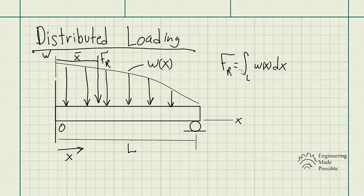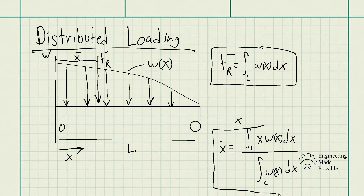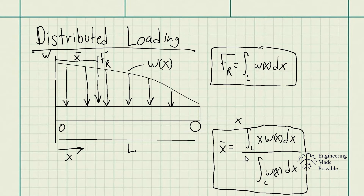Here are the equations. The resultant force is equal to the integral over the length of the beam of W(X) dX. This is how you solve it — if we happen to have the function for the distributed loading, we just take the integral of it, which is essentially the area under the curve. And X bar is equal to the integral over the length of the beam of X times W(X) dX, divided by the integral of W(X) dX. This is how you solve for the equivalent resultant force and the location with respect to point O.